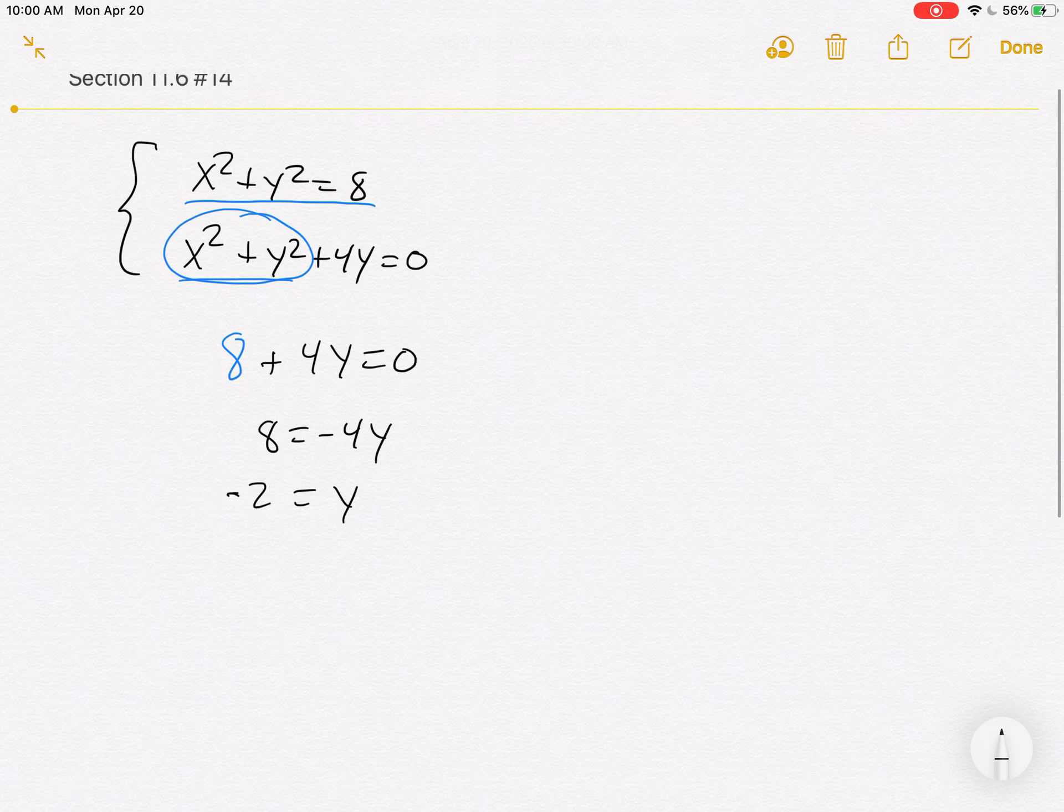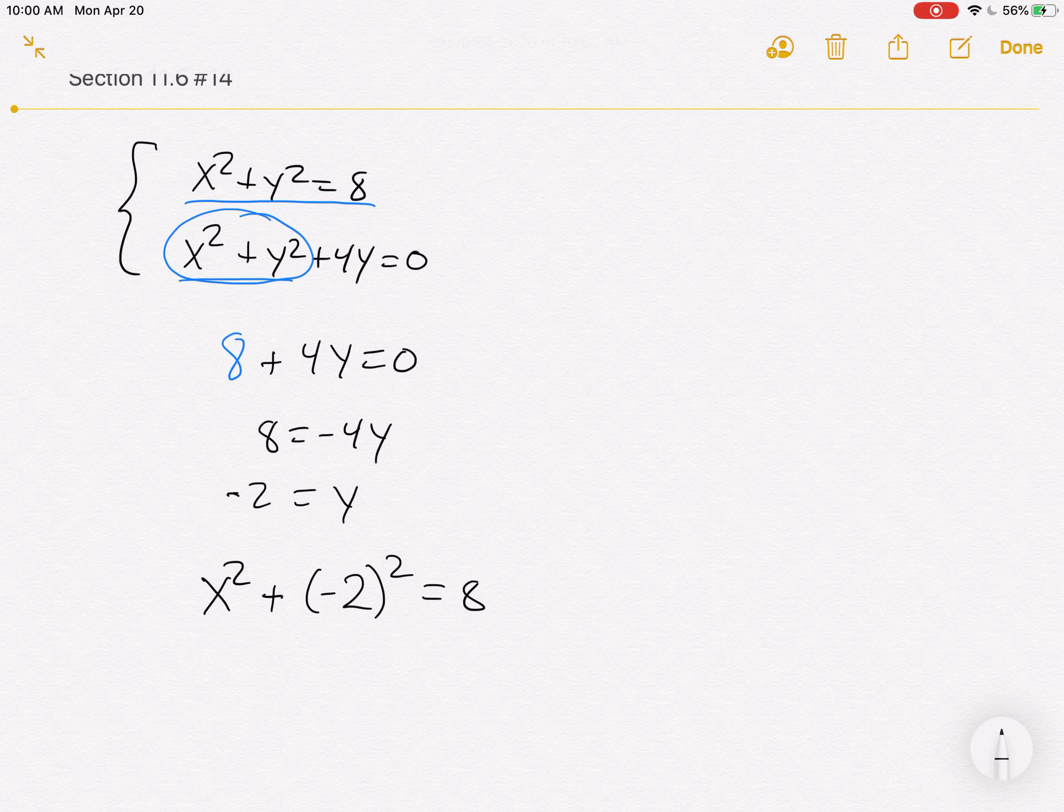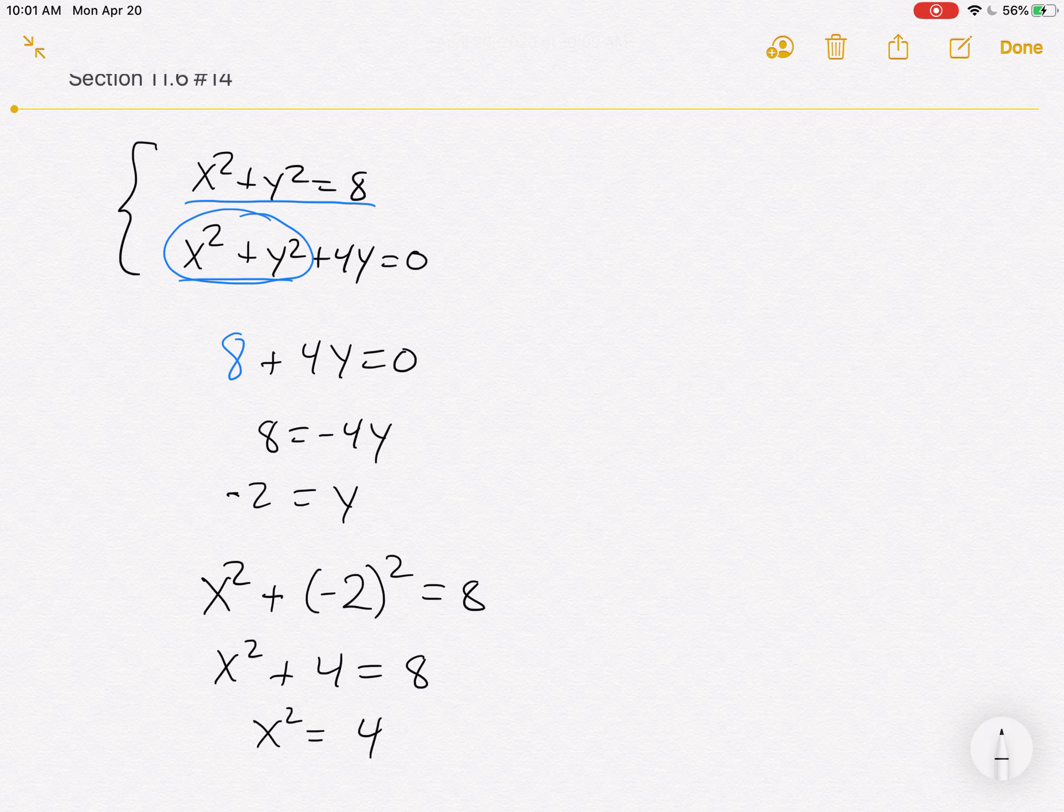How do we find our x values? Go back to any one of the original equations. Let's look at the first one. It seems to be the nicest. We're going to take the negative 2, put it in for the y, square it, and we'll have x squared plus 4 is equal to 8. Or x squared is equal to 4, which implies x is equal to not just 2, plus or minus 2. Don't forget your plus minus if you're doing the square root.